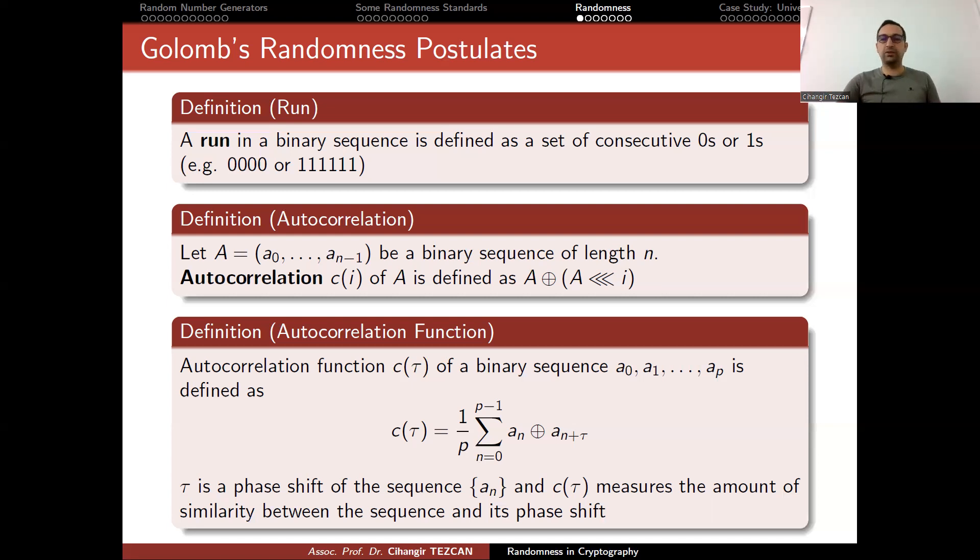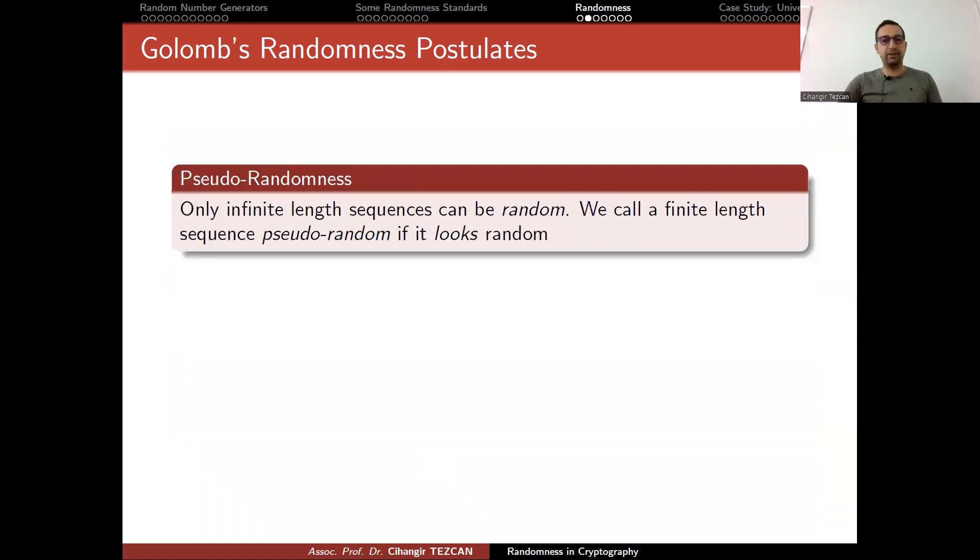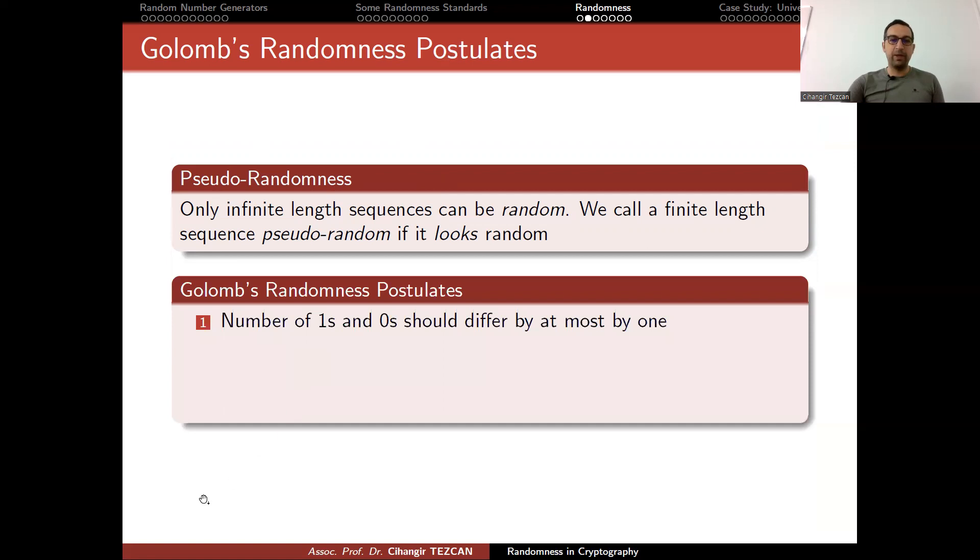With this definition, now I can describe what Golomb's postulates are. In order to understand why we are checking this, we have to talk about pseudorandomness. Only infinite length sequences can be random. That comes from the definition of random. But we call a finite length sequence pseudorandom if it looks random. This is the main idea.